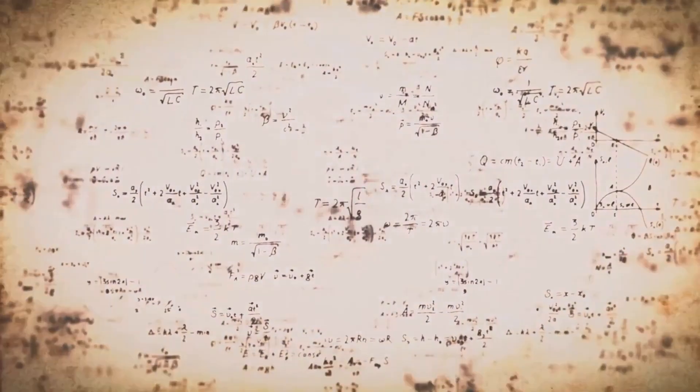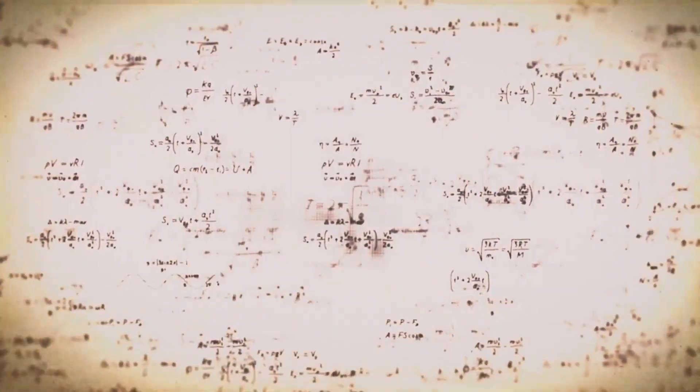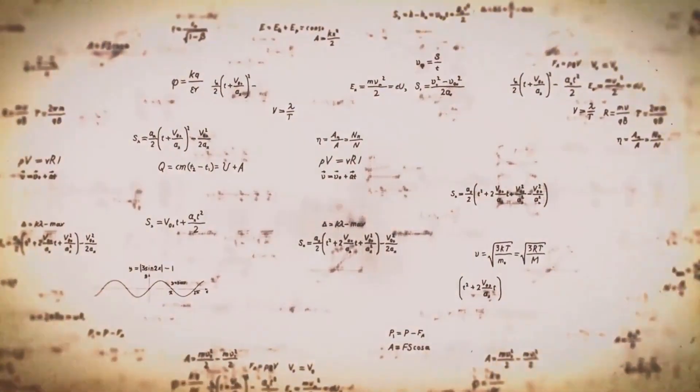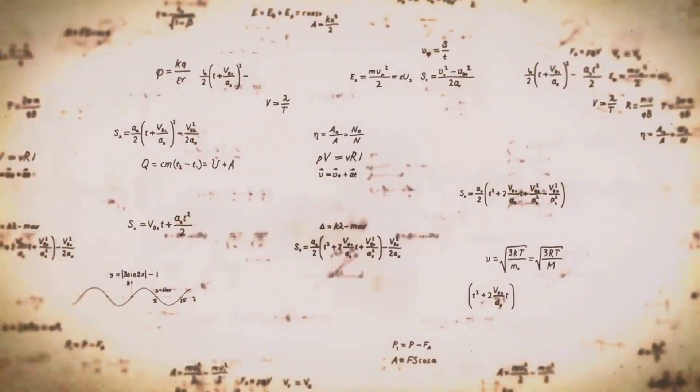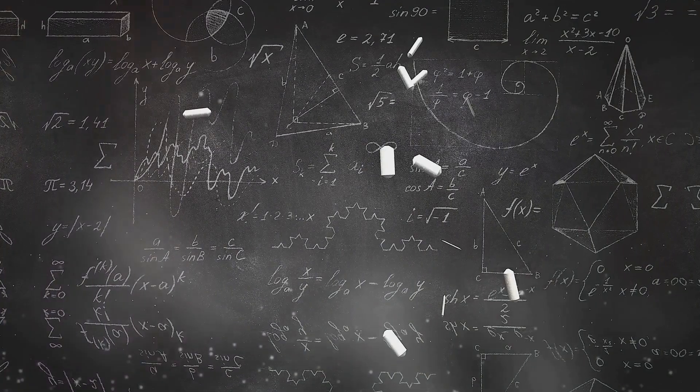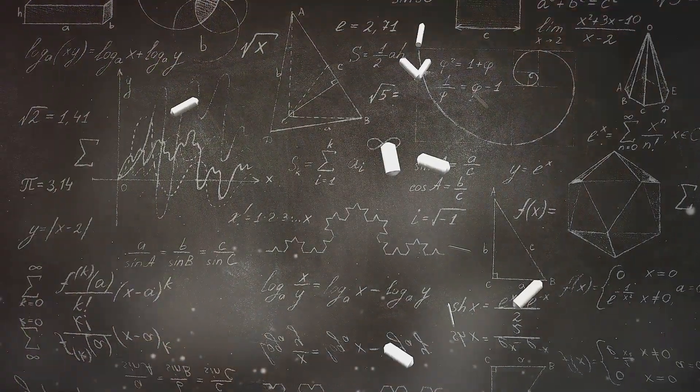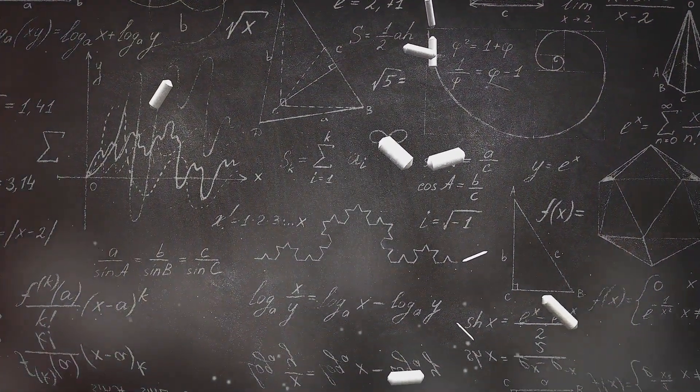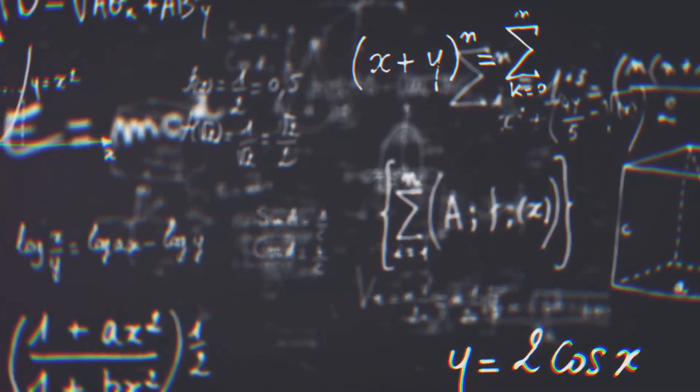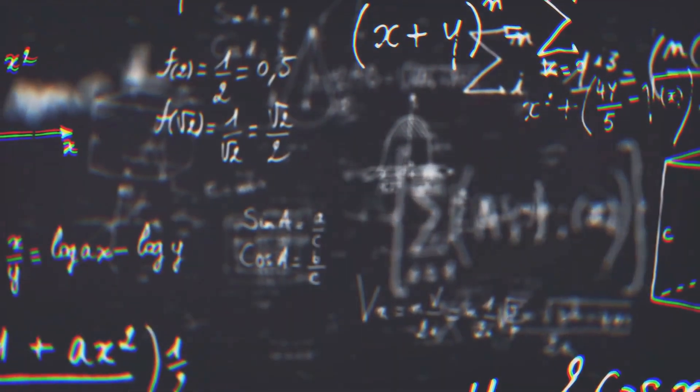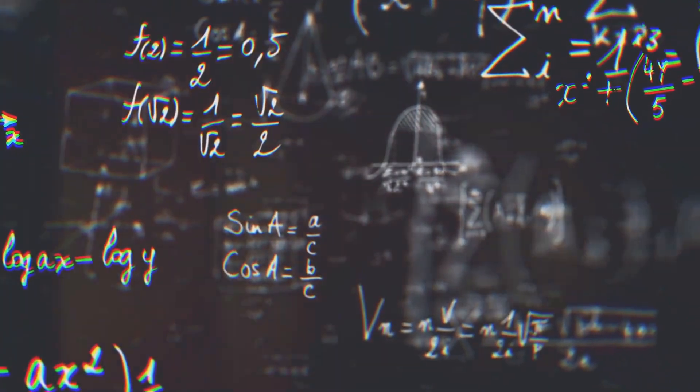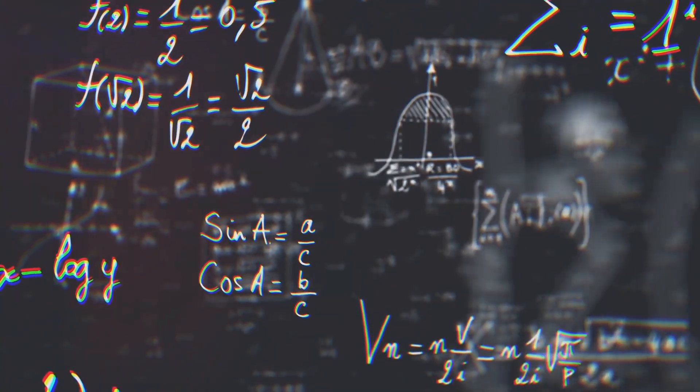The equation becomes y equals a times x squared plus b times x plus c. In this equation, a, b, and c are coefficients that define the curve, x is the independent variable, and y is the dependent variable. The curve that this equation represents can fit the data points more accurately than a straight line.